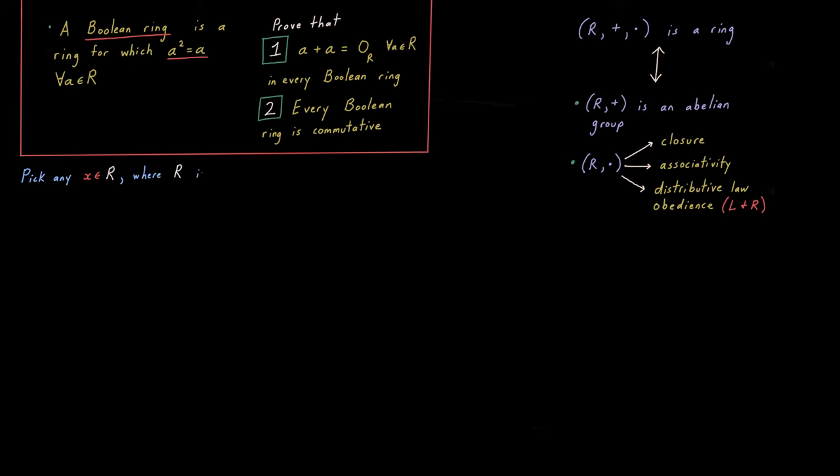Now, with that refresher in mind, one fruitful way of approaching this problem goes like so. Pick any element you want from any Boolean ring, which we'll call R, and we'll call the element X. So X plus X has to be in R by the definition of a ring, additive closure, and moreover, by the definition of a Boolean ring, we know that X plus X squared, i.e., X plus X all times X plus X, has to be X plus X.